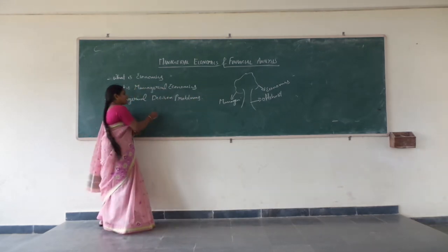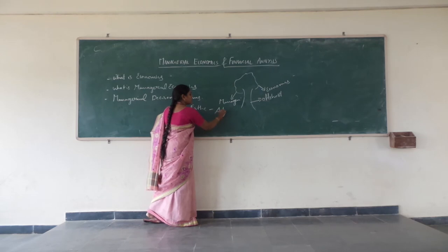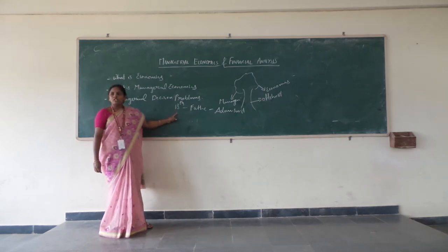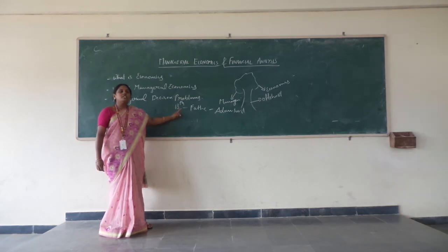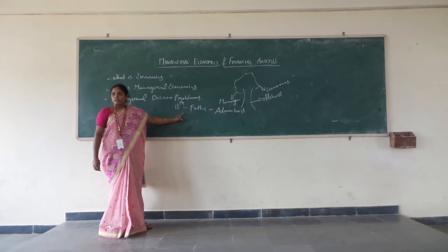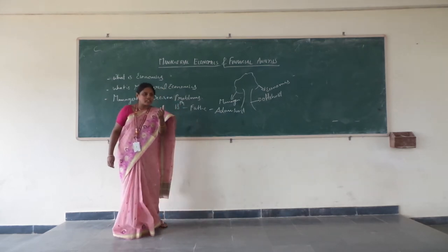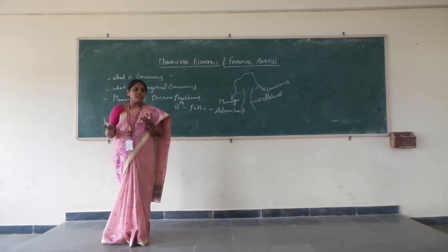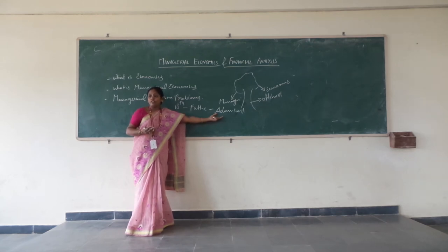In the 18th century, the father of economics — Adam Smith — defined economics as the study of nature and uses of national wealth. Why defined as wealth? Because of earning money and spending money. Earning money and spending money is the contribution of Adam Smith.